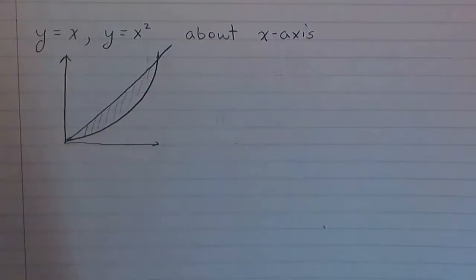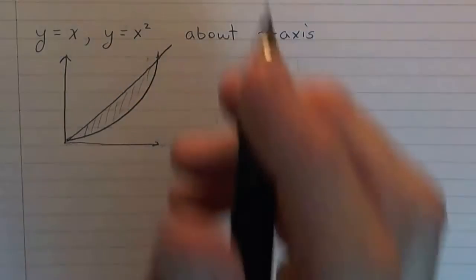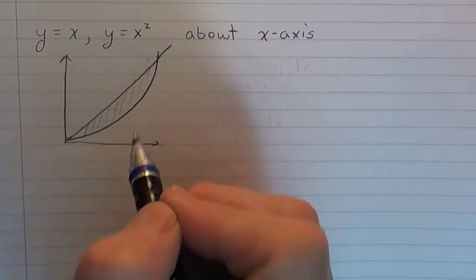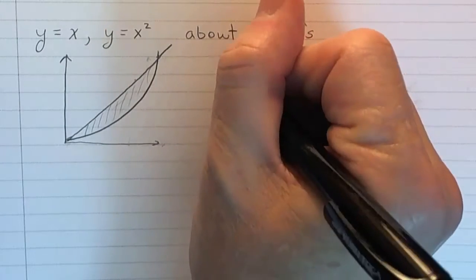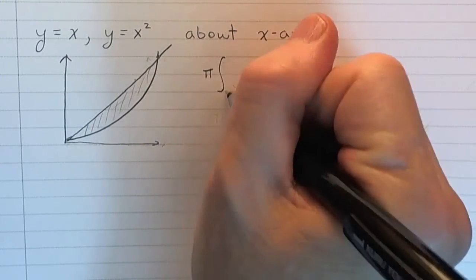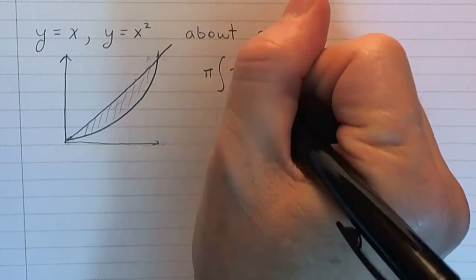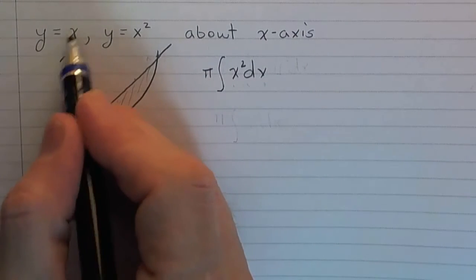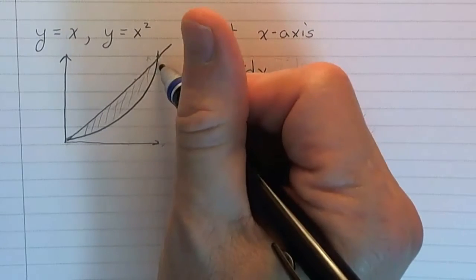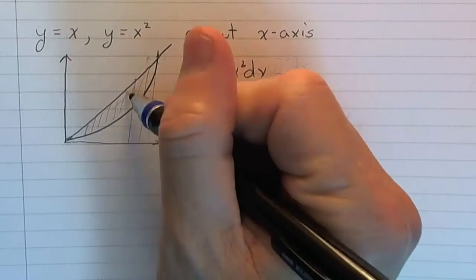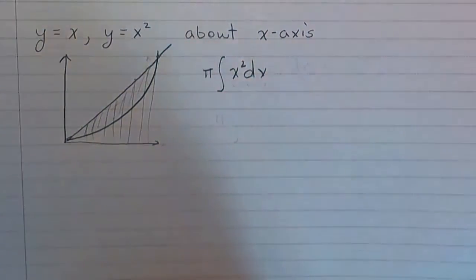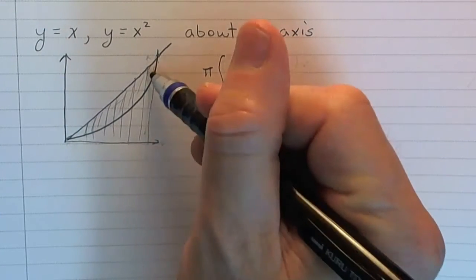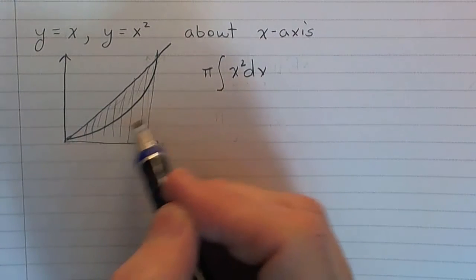Let's look at this a piece at a time. If I simply revolve y equals x about the x-axis, I could use the disk method: pi times radius squared dx, where my function is x. That would give me all that volume — if we revolve this whole region about the x-axis, we'd get a cone.